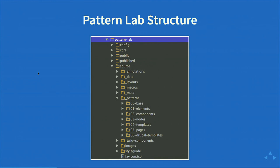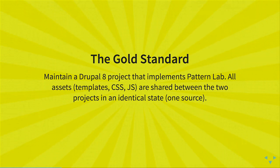From a high-level view, a Pattern Lab project directory has a source directory — the most important part, where all your templates and JSON files go — plus core and dependencies. Now we have the basics of atomic design and Pattern Lab. Our gold standard is maintaining a Drupal 8 project that implements Pattern Lab, ideally with a single source of assets shared between Drupal 8 and Pattern Lab that are identical. That's what we're working towards.